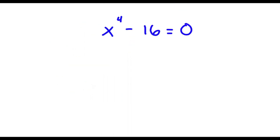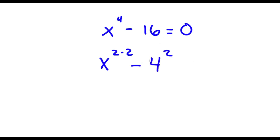Alright, so I have x to the power of 4 minus 16 is equal to 0. Now to start, x to the power of 4 is the same thing as x to the power of 2 times 2, because 4 is 2 times 2. And 16 is the same thing as 4 to the power of 2. So I have x to the power of 2 times 2 minus 4 to the power of 2 equals 0.